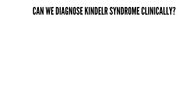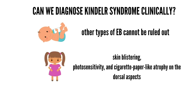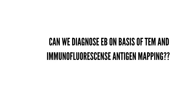Moving on to diagnosis: can we diagnose Kindler syndrome on a clinical basis? In neonates, the diagnosis cannot be suspected clinically since blistering cannot be distinguished from other types of epidermolysis bullosa. In older children, the coexistence of skin blistering, photosensitivity, and cigarette-paper-like atrophy on the dorsal aspect of hands raises suspicion of Kindler syndrome. In adults, poikiloderma in conjunction with a history of blistering and photosensitivity during childhood suggests the diagnosis.